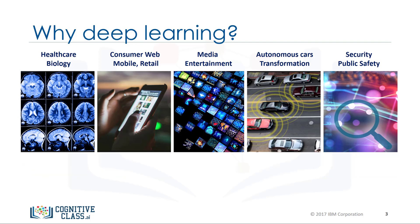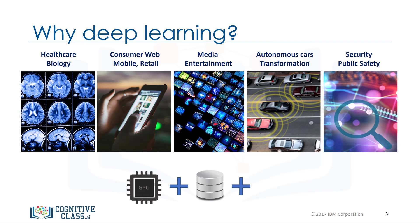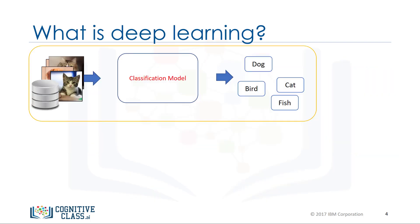Looking at all of these industries, we can see that the increasing popularity of deep learning today is due to three reasons. First, the dramatic increases in computer processing capabilities. Second, the availability of massive amounts of data for training computer systems. And third, advances in machine learning algorithms and research. Now let's take a closer look at deep learning and see why it's such a hot topic today.